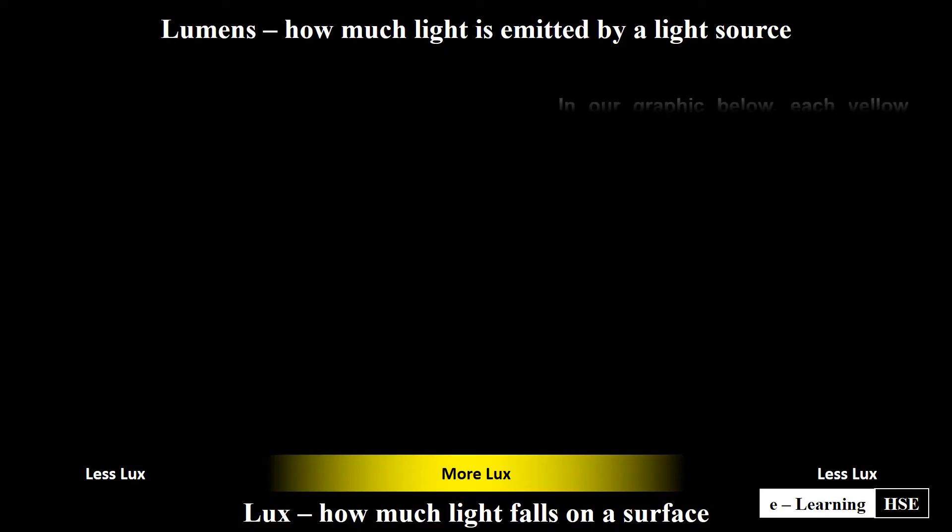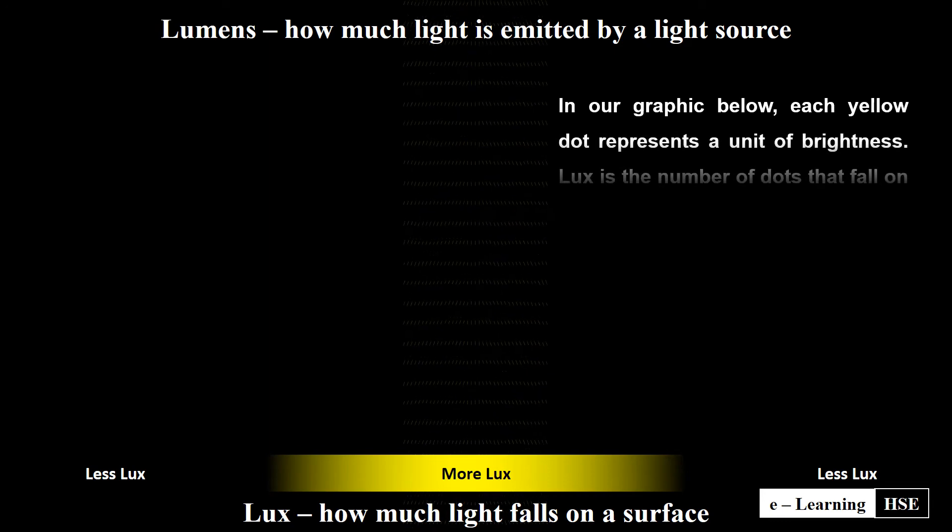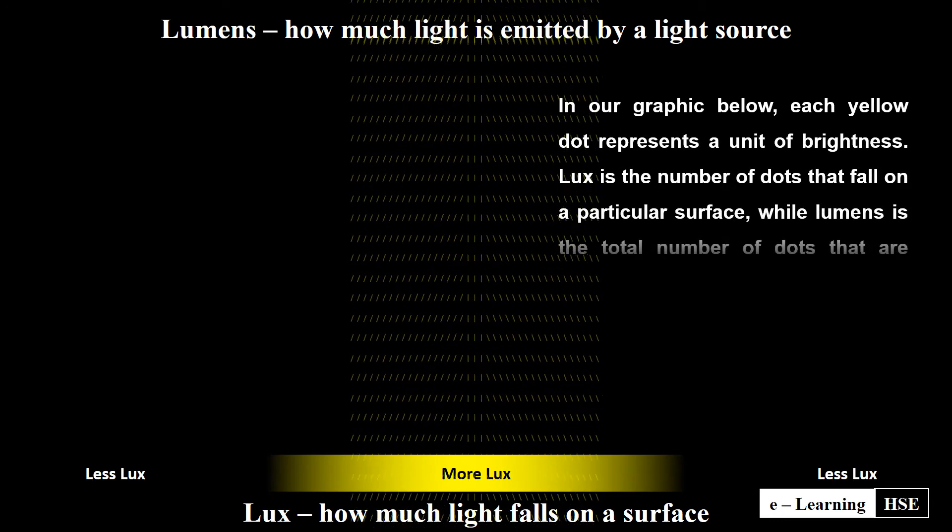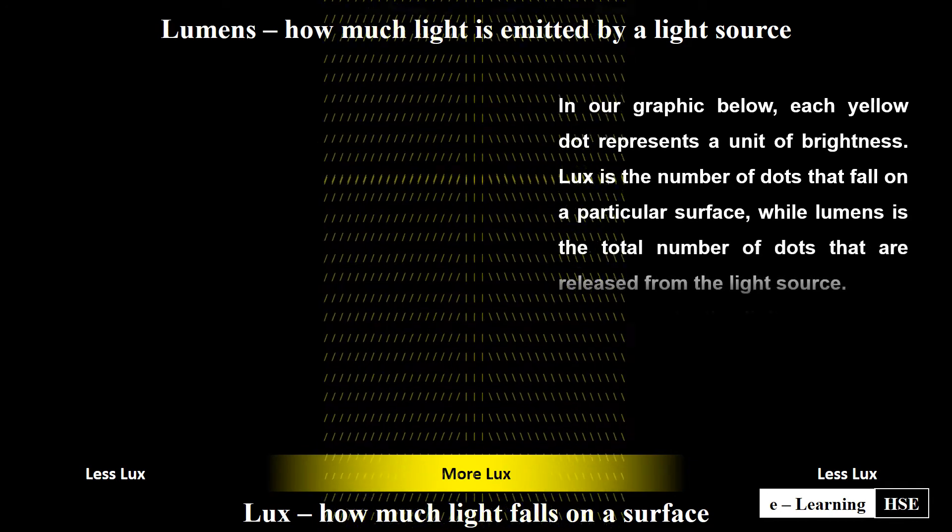In our graphic below, each yellow dot represents a unit of brightness. Lux is the number of dots that fall on a particular surface, while lumens is the total number of dots that are released from the light source.